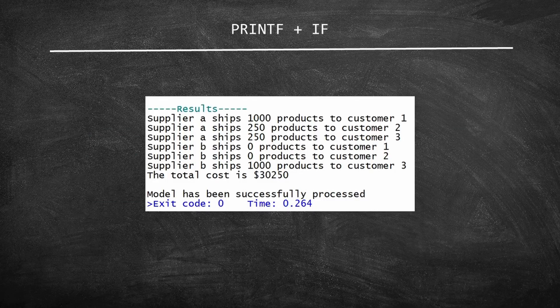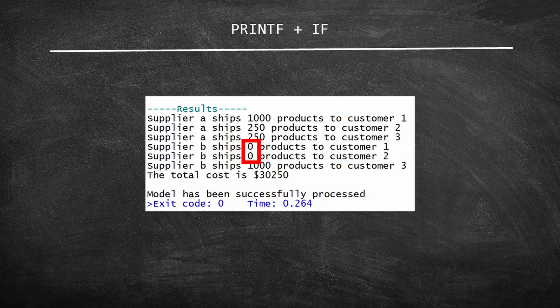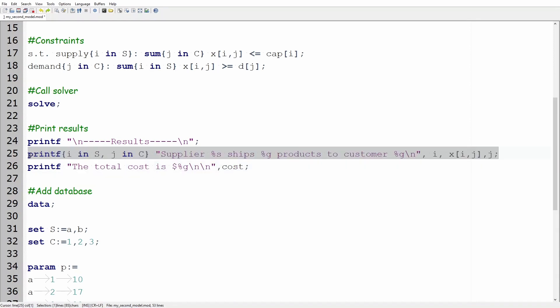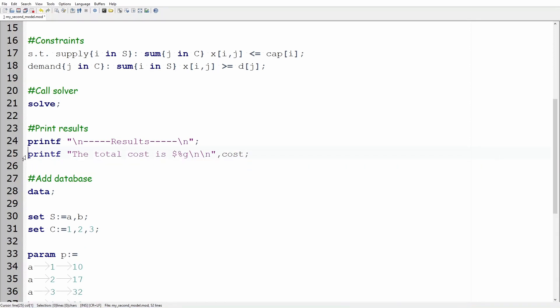Do you see that some variables have a final value of zero? In this new version we are going to print only the positive values. Start erasing the printf statement of the previous version except for the objective function statement. Nice!